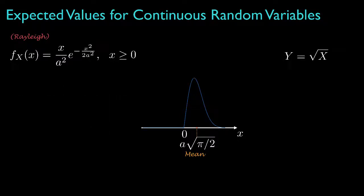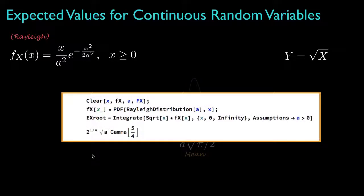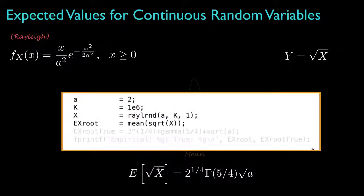As an example, suppose we wanted to determine the expected value for the square root of a Rayleigh random variable. Using Mathematica, we could define the density — for which Mathematica has a special function — and then perform the required integral of the square root of x times the density. That produces a result of two to the one-fourth times the gamma function evaluated at five-fourths times the square root of A, the parameter. A more empirical approach would be to simulate a million realizations of a Rayleigh random variable and then compute the arithmetic mean of their square roots.